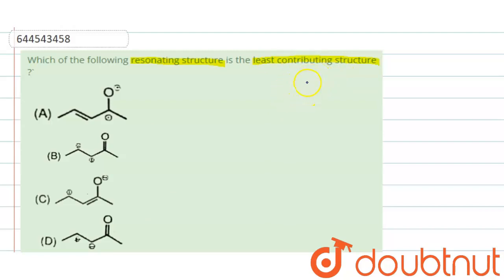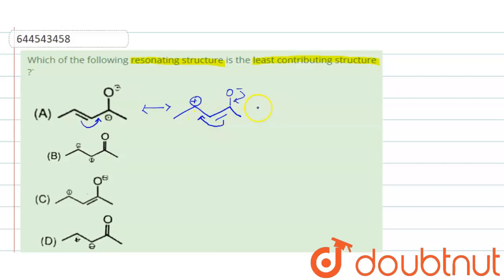The least contributing structure will be the one from which a stable molecule is formed most easily. Coming to the first resonating structure, there is a negative charge on oxygen (an electronegative element) and a positive charge on carbon. A shift of the double bond takes place — the negative charge on oxygen shifts its electrons, the double bond shifts to the adjacent carbon, and we get the stable molecule.